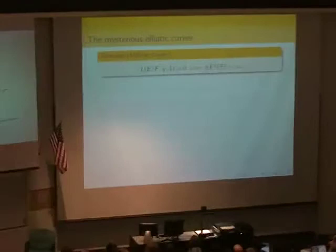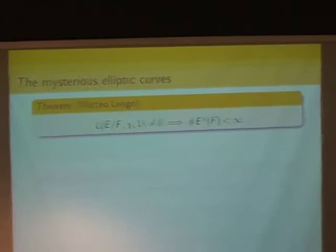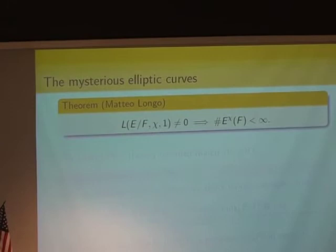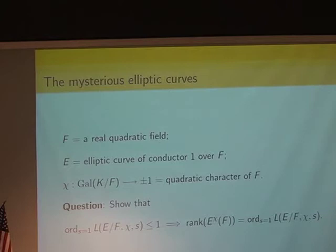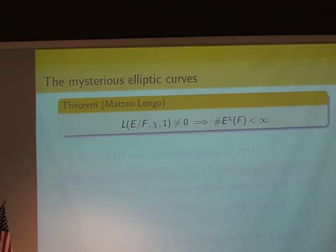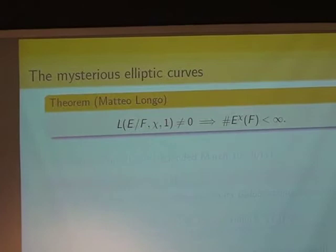What do we know about these curves? There is the theorem of Matteo Longo, which at least proves the rank zero case of BSD, telling us that for these twists, if the L-function is non-zero, then at least the Mordell-Weil group is finite. The reason these curves are mysterious is that they do not arise in the Jacobian of any Shimura curve. Therefore we don't know how to produce any nice system of points on that curve. The mechanism behind Longo's proof is the theory of congruences of modular forms, showing that even if E does not appear in the Jacobian of a modular curve, its p^n torsion does arise in the Jacobian of many Shimura curves.